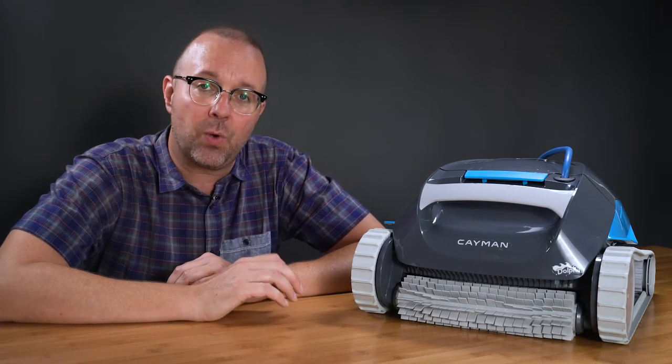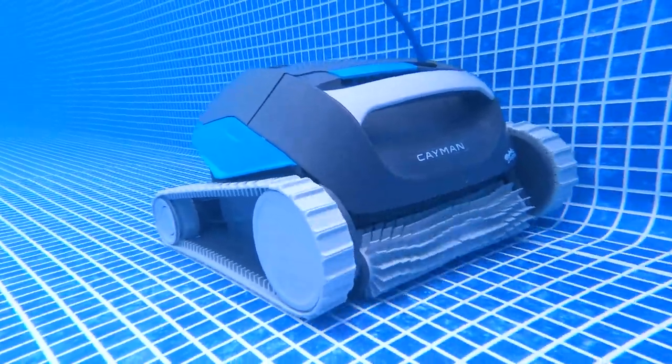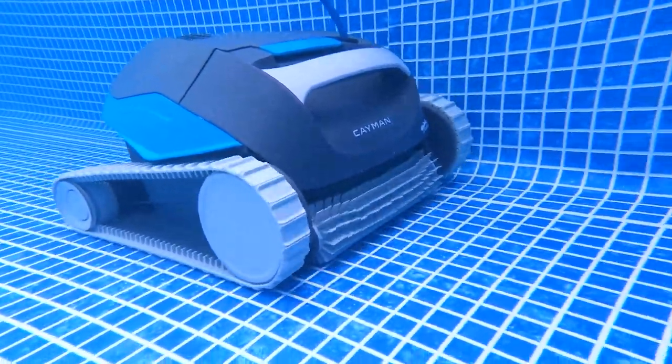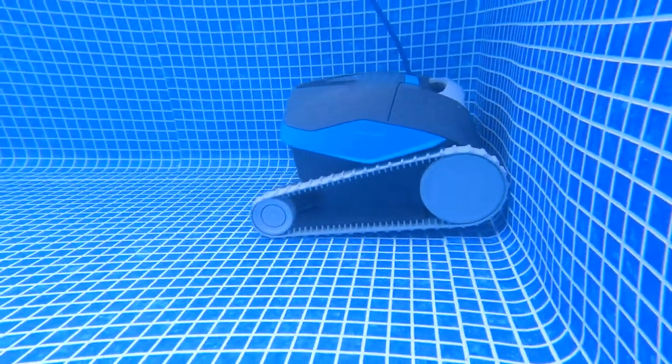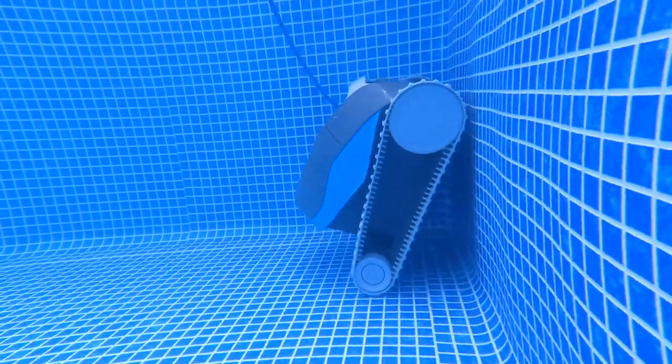Let's start with the most important part of a robotic pool cleaner, its cleaning ability. I can say I was quite impressed with the Cayman when I watched it clean the pool. Since it's primarily an in-ground cleaner, it does an especially great job at cleaning the floor and walls of your pool, thanks to its hypergrip tracks and front scrubbing brush.